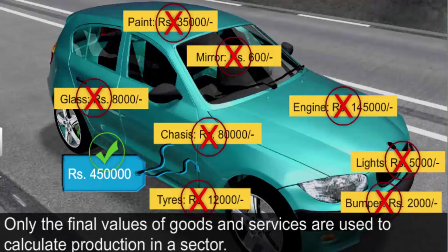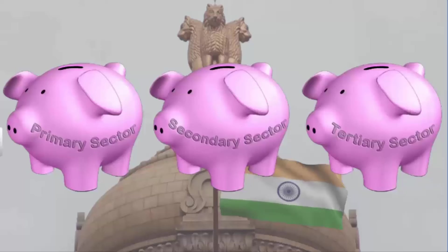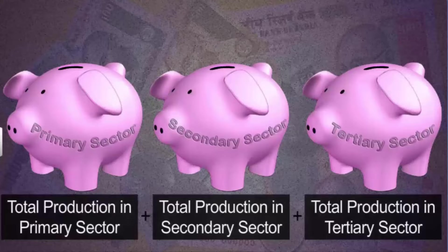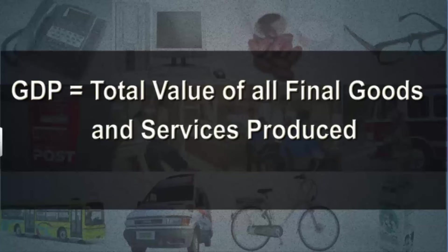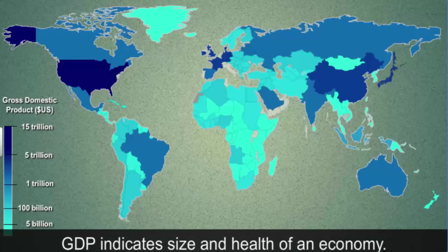Every year, the government collects data on the values of final goods and services produced in different sectors of the economy. The sum of the total production in the three sectors in a year gives the Gross Domestic Product, or GDP, for that country in that year. We can also say that GDP equals the total value of all final goods and services produced in a country in a year. GDP is a globally accepted indicator of the size and health of a country's economy.